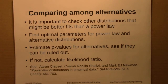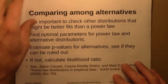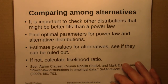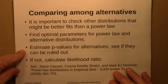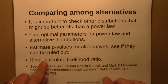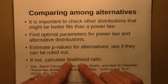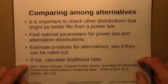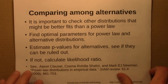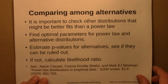Additionally, it's important to compare alternative models. Maybe your data is pretty well fit by a power law, but it might be better fit by something else — maybe a log-normal or a stretched exponential. The way to do that is to find optimal parameters for the alternatives, estimate their p-values, and probably better still, calculate a likelihood ratio. The details for all of this are in the important paper by Clauset, Shalizi, and Newman, where this is discussed much more fully.